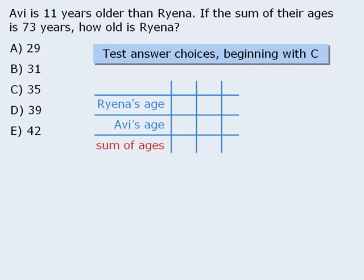We are going to use this table to keep track of our work. Answer choice C says that Ryena is 35 years old, so let's add this to our table. The question tells us that Avi is 11 years older than Ryena, so if Ryena is 35, then Avi must be 46 years old. When we find the sum of these two ages, we get 81.